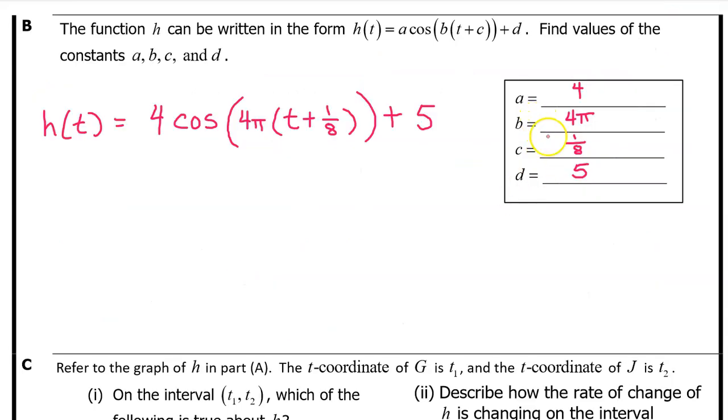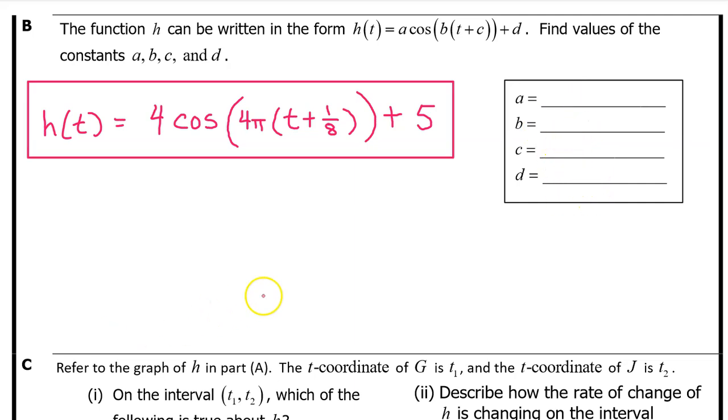On the AP exam, they will give you an answer box that you can use to record the values of a, b, c, and d if you wish. Or you can leave the answer box blank and record your answer as an expression for h of t with the values of a, b, c, and d filled in like this.